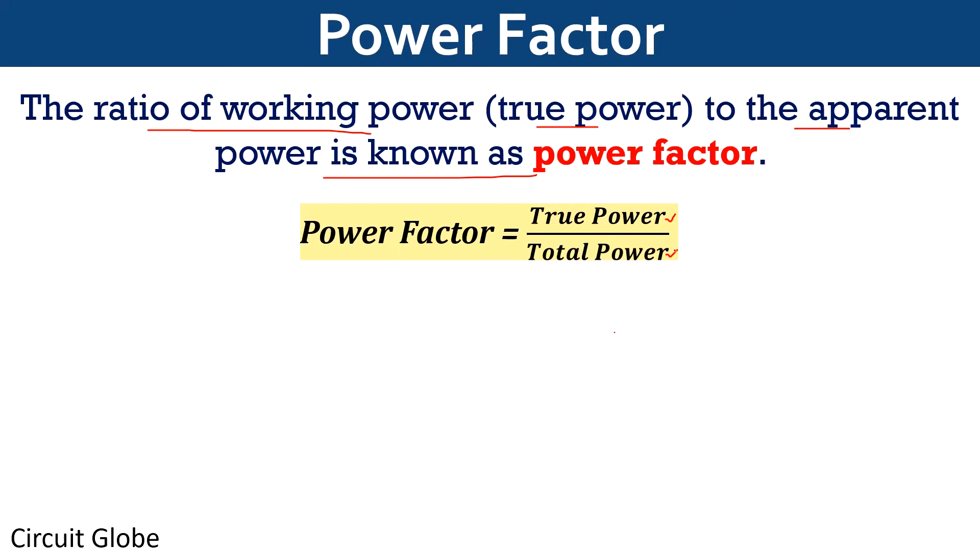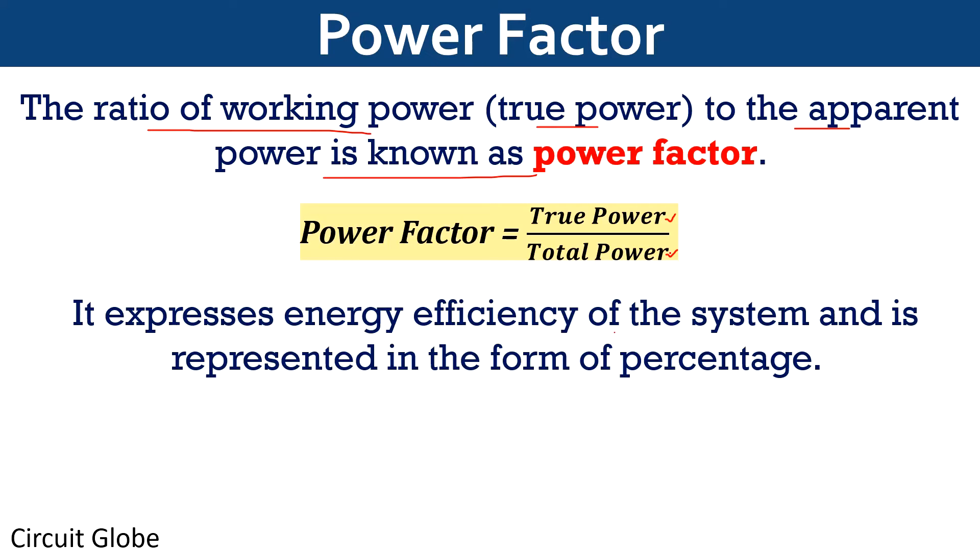In DC circuits, the power of the circuit is determined by finding the product of readings of voltmeter and ammeter. But in AC circuits, such multiplication provides apparent power, that is the total power, and not the actually used power. The reason for the same is that AC circuits do not solely utilize the totally supplied power to the circuit and the power which the circuit actually utilizes is called the true power.